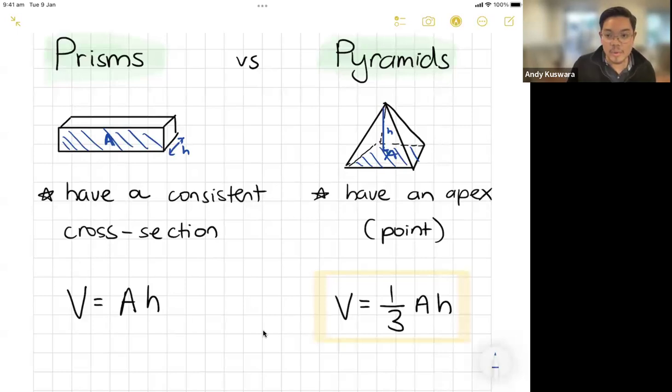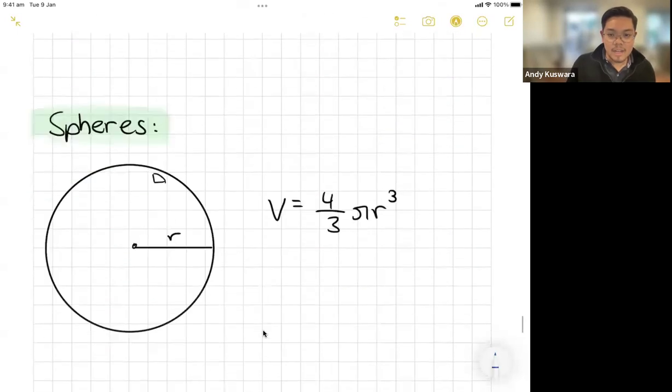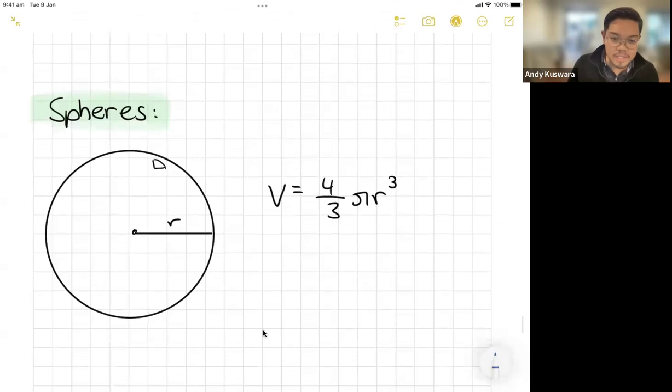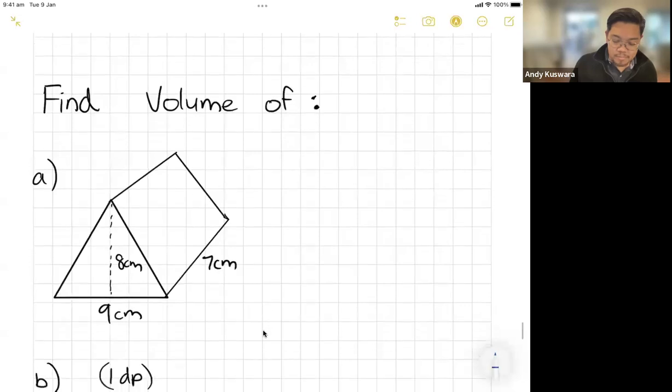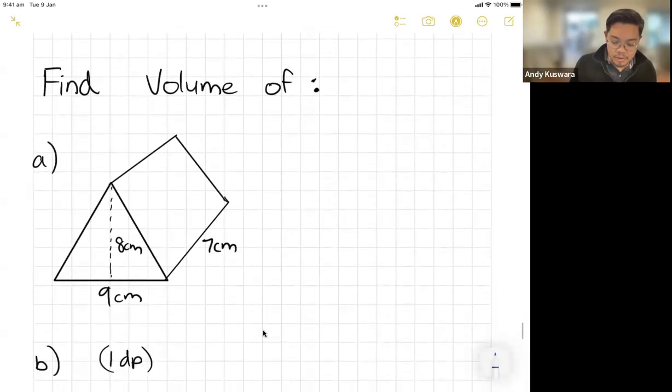Now spheres have a more particular formula. I've drawn this little thing so it kind of looks like a 3D shape. A sphere is given by four on three pi r cubed.